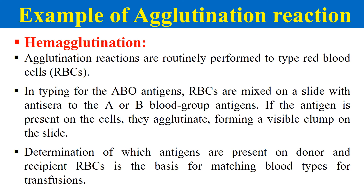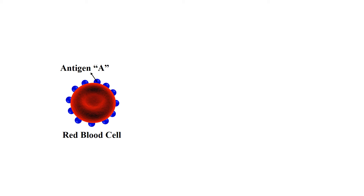An example of agglutination reaction is hemagglutination, seen in the blood grouping experiment. Whenever someone checks the blood group of a particular individual, the reactions that come into play are hemagglutination reactions. The principle of the blood grouping test is that individuals have a particular antigen — either A, B, or both — on their RBC plasma membrane. You take blood and add two or three drops of antibody A, B, or D, and the reaction takes place only where the particular antigen is present; that reaction is an agglutination reaction.